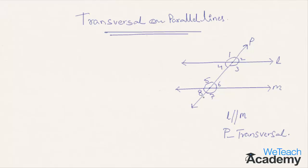In this diagram, the corresponding angles — that is, angle one and angle five — are always equal. If you take a trace paper, trace lines L, M, and P, and slide the tracing paper along P until line L coincides with line M, you find that angle one equals angle five. Similarly, angle two equals angle six, angle three equals angle seven, and angle four equals angle eight — these are pairs of corresponding angles.